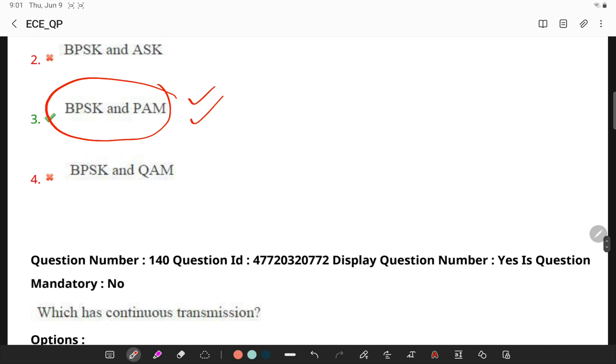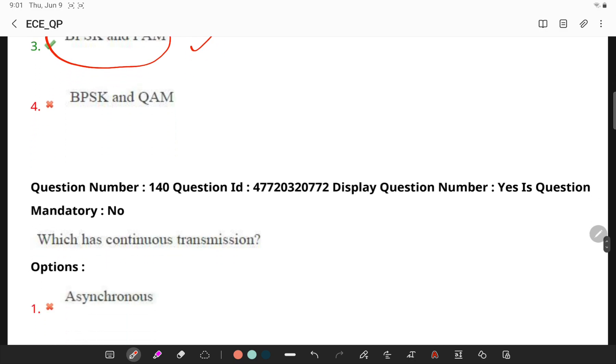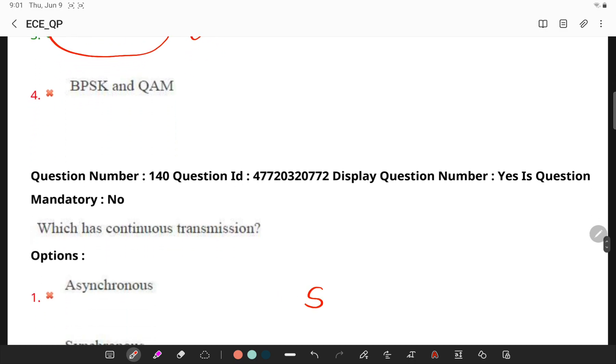Asynchronous transmission. Which has continuous transmission? So synchronous transmission is one in which the sender will be sending the receiver the data in which the transmission is continuous stream of bits.